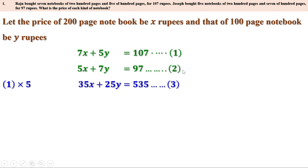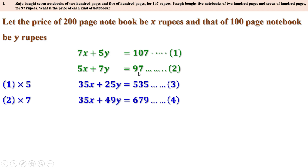Now let us multiply the second equation by 7, the coefficient of X in the first equation. 5X into 7 is 35X, 7Y into 7 is 49Y, and 97 into 7 is 679. So we get 35X plus 49Y equal to 679, which we take as the fourth equation. In the third and fourth equations the first term is the same, so we can subtract one from the other. Let me subtract the third equation from the fourth.